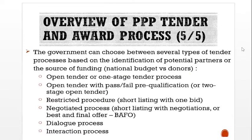The government can choose between several types of tender processes based on the identification of potential partners or the source of funding — national budget versus donors. Options include: open tender or one-stage tender process; open tender with pass or fail pre-qualification or two-stage open tender; restricted procedure with shortlisting and one bid; negotiated process with shortlisting and negotiation or best and final offer (BAFO); and dialogue or interaction process.